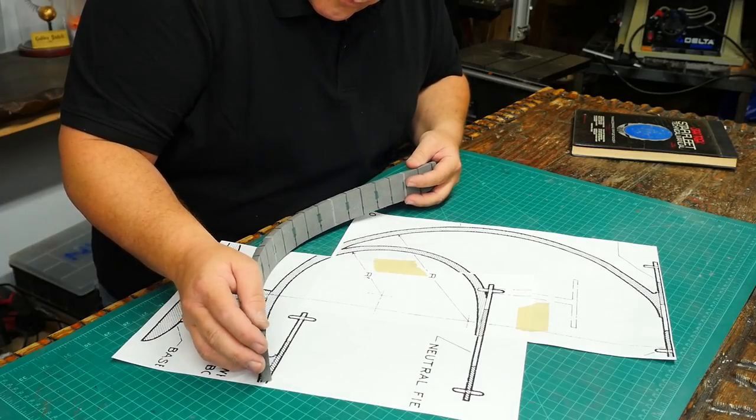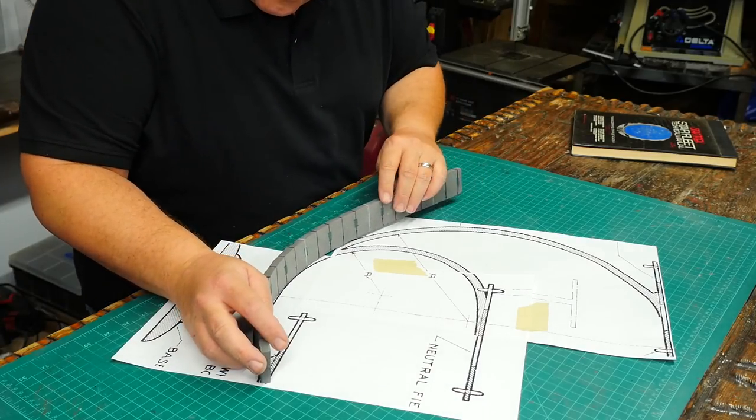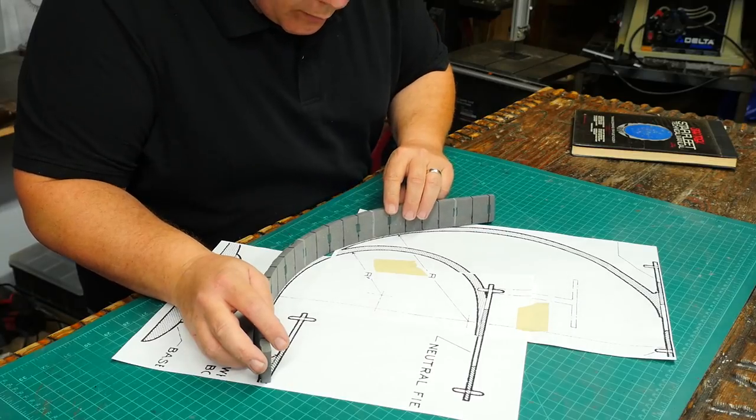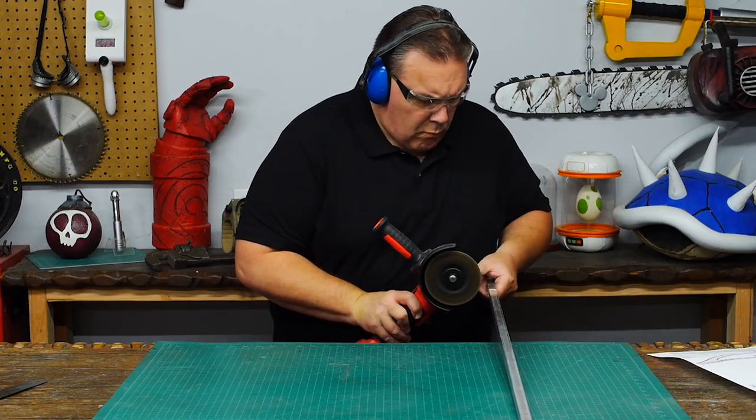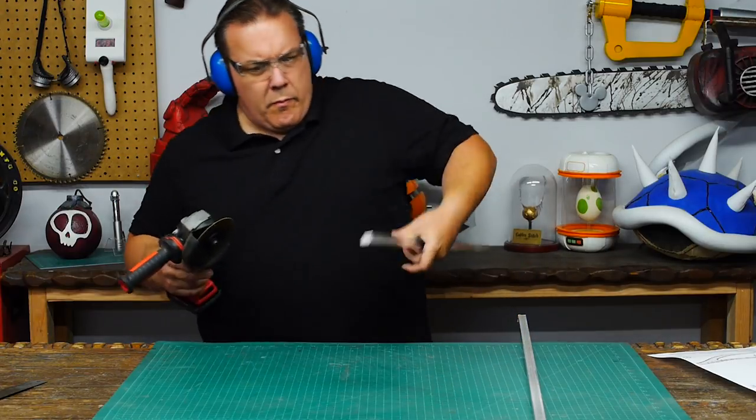I used my foam ruler that I had made for Hellboy's right hand of doom to measure how long the curves needed to be. And then I cut some pieces of 5 eighths inch aluminum square stock to use for the upright supports.